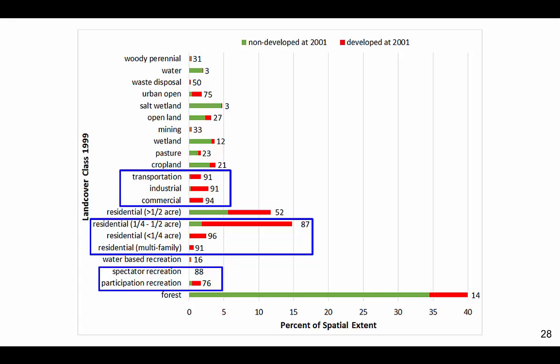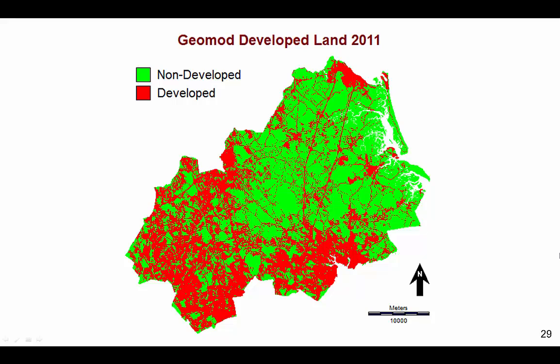The land cover classes with the highest suitability values are outlined in blue. GEOMOD also outputs the map of simulated land cover at the ending time, which is 2011. The suitability map dictates the sequence in which GEOMOD selects pixels for the simulated gain of developed. GEOMOD selects the non-developed pixels that have the largest suitability values for the transition to developed until the quantity of pixels of the simulated change matches the quantities specified.